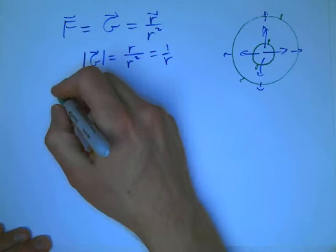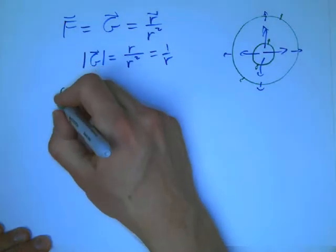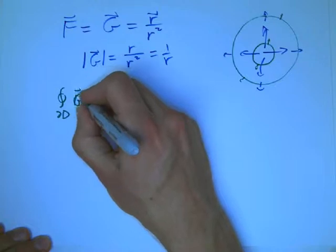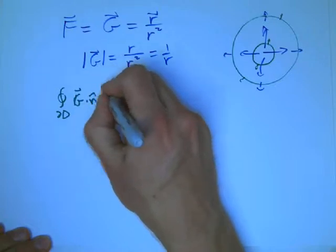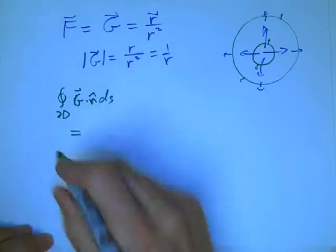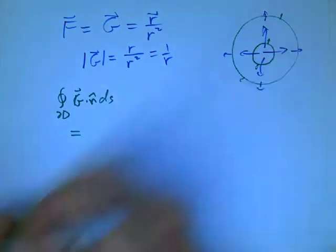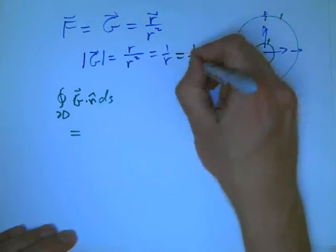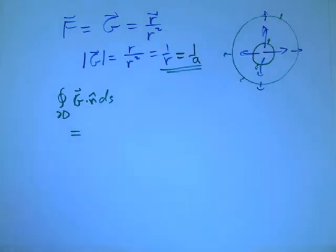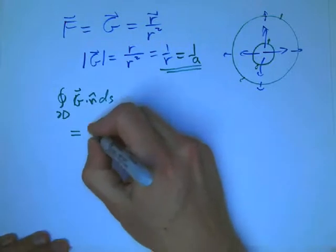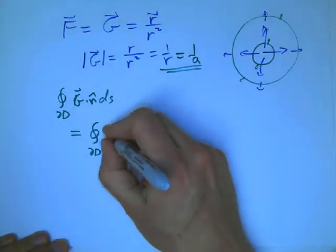The first thing is to calculate the left-hand side of the divergence theorem: G dot n ds. This still satisfies the three conditions. It's radial, so it's always perpendicular to that circle. It has a constant magnitude, because on the circle it's just going to have magnitude 1 over a. And the length of the circle is still known. So, just to go through it real quickly again.